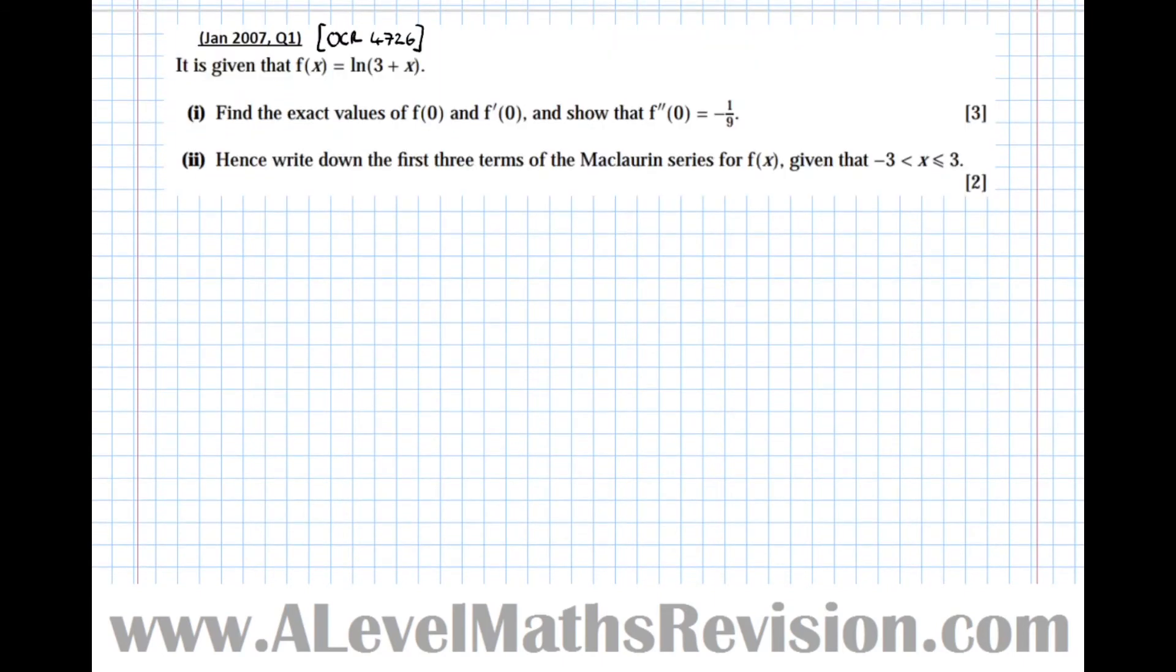So let's have a look at another one now. This question says it's given that f of x equals log of 3 plus x. What this question is going to do, it's going to guide us through a way of doing this question. But after we've done it, I'm going to propose a quicker and easier way of doing it. Obviously in an exam, you should always go with the way that they want you to do it. However, I just think it's important to point out this different way as well. So it's given that f of x equals log of 3 plus x. Find the exact values of f of 0, f dash 0, and show that f double dash 0 equals minus a 9th.